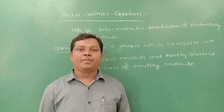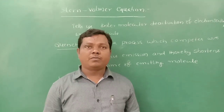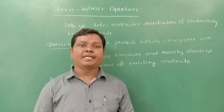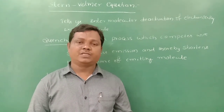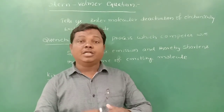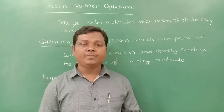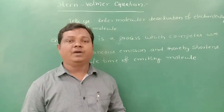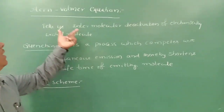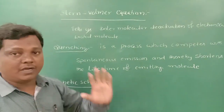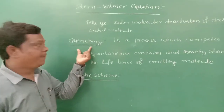Good morning. In this video I'm going to teach the derived Stern-Volmer equation. The Stern-Volmer equation tells us about intermolecular deactivation of photophysical reactions — that is fluorescence and phosphorescence. These are intramolecular deactivation physical processes. Here we are discussing intermolecular deactivation of fluorescence, where electronically excited molecules are involved. Stern and Volmer worked on this concept and derived equations that mainly depend on quenching.